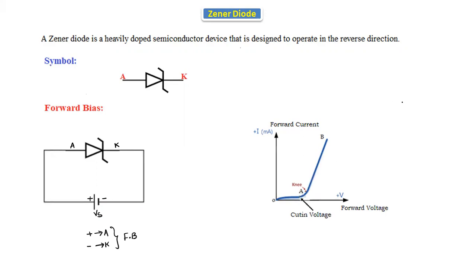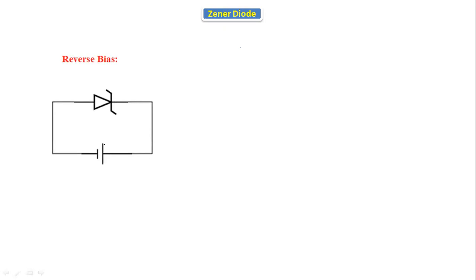This is called the cut-in voltage — the voltage where the diode starts to conduct. In silicon it is 0.7V and in germanium it is 0.3V. The knee point is the point where the diode current starts increasing exponentially. The forward bias characteristics are the same as a PN junction diode, but this diode is useful in the reverse bias condition because it is designed for special purpose operation in the reverse direction.